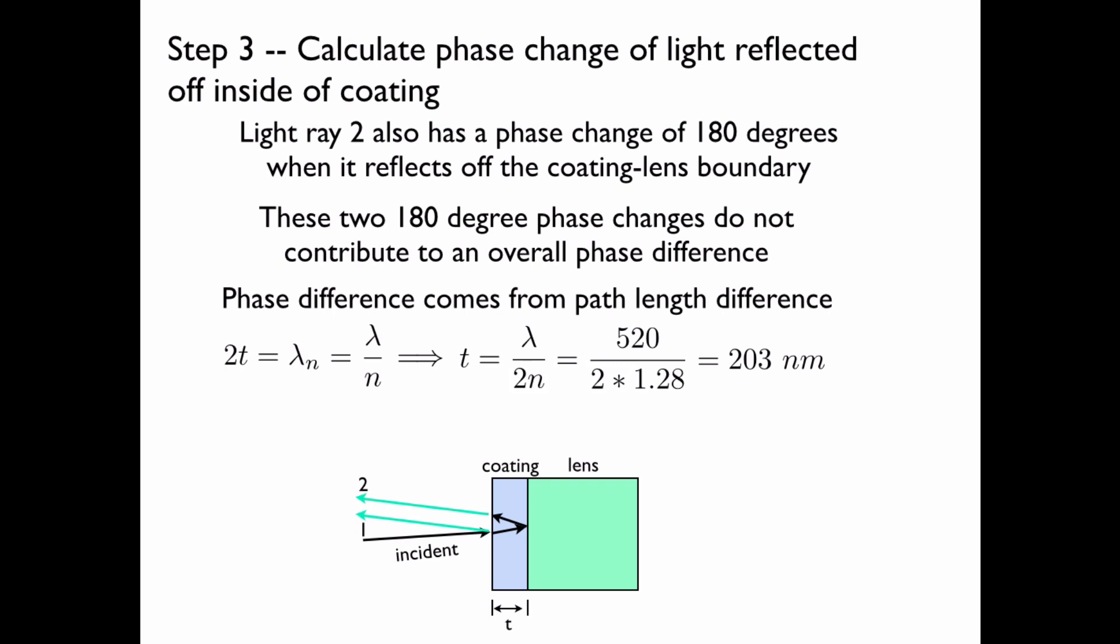However, we could have also had constructive interference if the path length was some other multiple of lambda, say 2 lambda, 3 lambda, 4 lambda. So any integer multiple of 203 nanometers would give us constructive interference for light of wavelength 520 nanometers. However, we were asked for the minimum and the minimum is 203 nanometers.